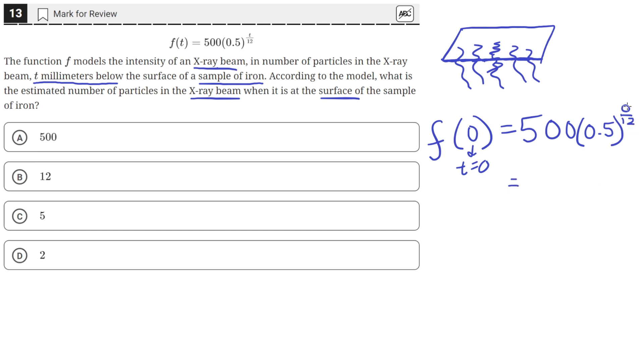We can simplify that because 0 divided by 12 is just 0. So 500 times 0.5 raised to the 0 power. And anything raised to the power of 0 is just equal to 1. So all we're left with is 500. So the answer is a.